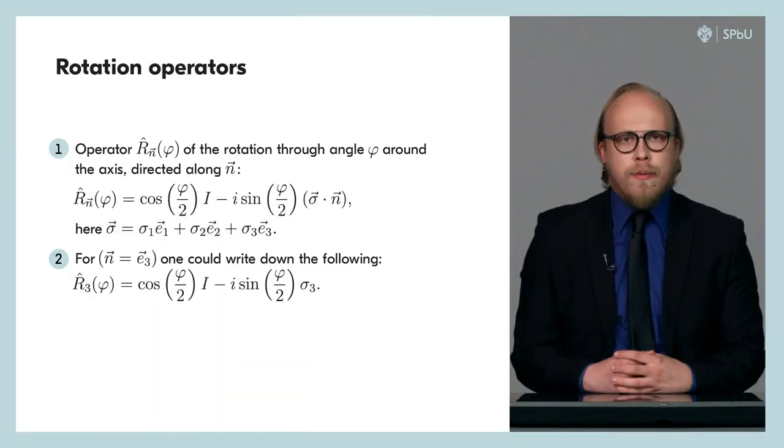Note that the eigenvalues of all Pauli matrices are equal to 1 and minus 1. Let us now, with the help of the Pauli matrices, define the rotation operator as the angle φ around the axis, the direction of which is given by an arbitrary vector n of unit length.